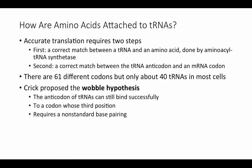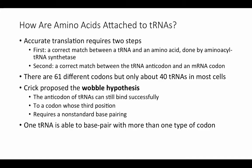Crick proposed the Wobble hypothesis, which states that the anticodon of tRNAs can still bind successfully to a codon as long as the variation is in that third position — the Wobble position — where different codons will code for the same amino acid. This requires some level of non-standard base pairing between the anticodon and the codon, allowing one tRNA to base pair with more than one type of codon.